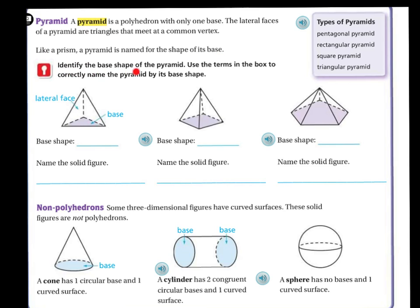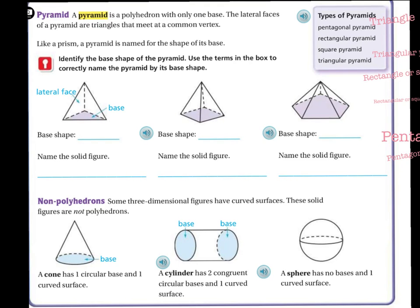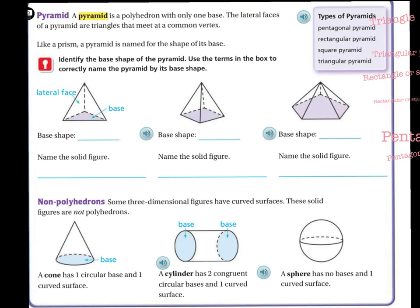You're going to identify the base shape of the pyramids and use the terms in the box to correctly name the pyramid by its base. So see, these are the three lateral faces, and then there's the base. So if I'm looking at the base shape of this one, the base shape is a triangle.